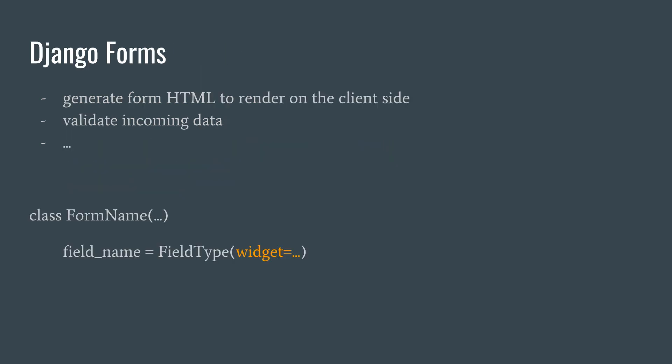First off, I want to clear up the confusion about what Django Forms are used for. Remember that they solely live on the backend. However, you can use them for things like generating form HTML to render on the frontend, or validating incoming data. A form is just a class which contains certain fields. Every field has a widget associated with it that is used to tell Python which HTML tag it should use for this particular field when generating the HTML we can display on the client side. Basically, Django Forms make our lives easier by taking care of common tasks.